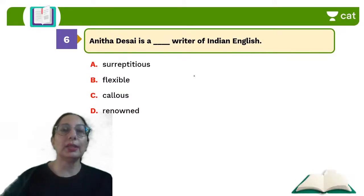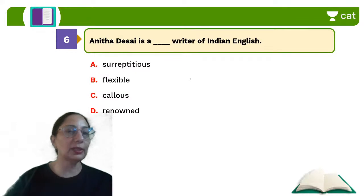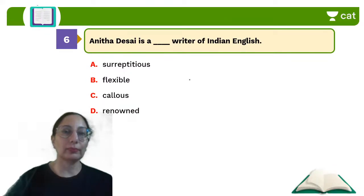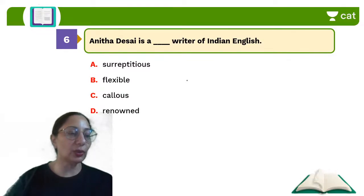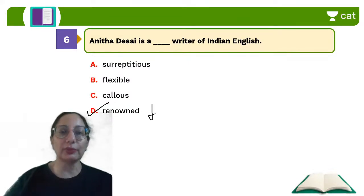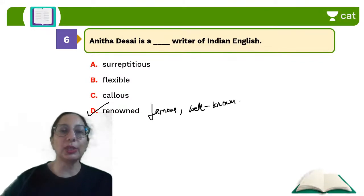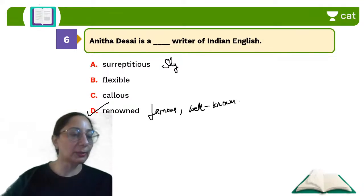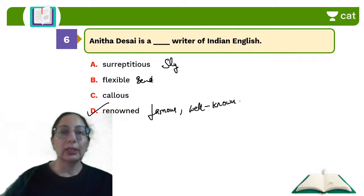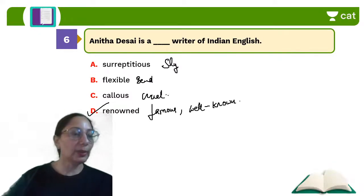Question six: Anita Desai is a DASH writer of Indian English. The answer is D — renowned. Renowned means somebody who is very famous, well known. Surreptitious means doing something under the sly — being very sly. Flexible is something which can bend. Callous means being cruel.